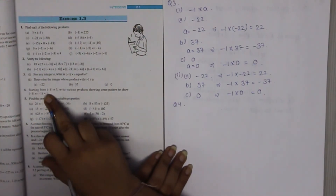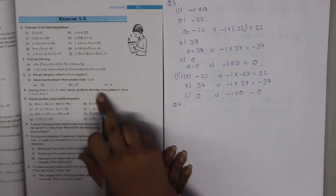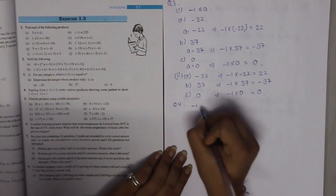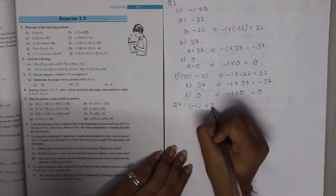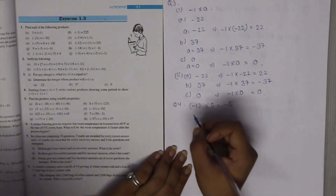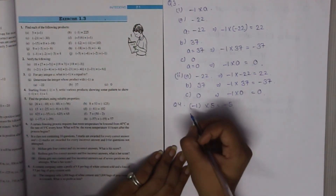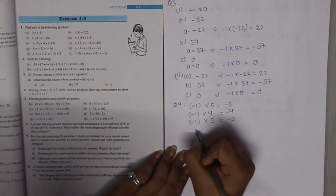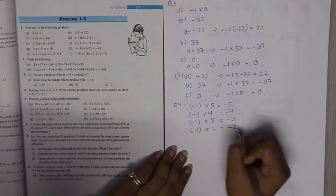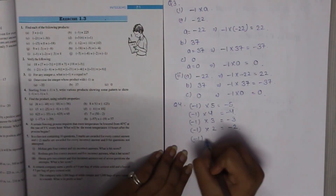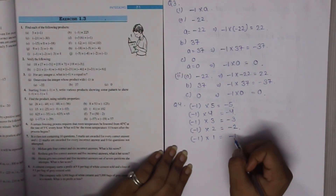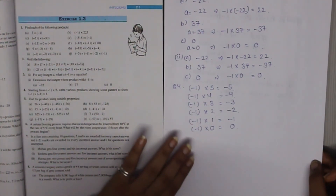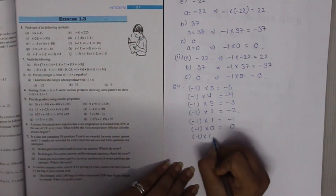Question 4: starting from minus 1 into 5, write various products showing a pattern to show that minus 1 multiplied by minus 1 equals 1. Pattern: minus 1 × 5 = minus 5; minus 1 × 4 = minus 4; minus 1 × 3 = minus 3; minus 1 × 2 = minus 2; minus 1 × 1 = minus 1; minus 1 × 0 = 0. Following the pattern: minus 1 multiplied by minus 1 equals 1.